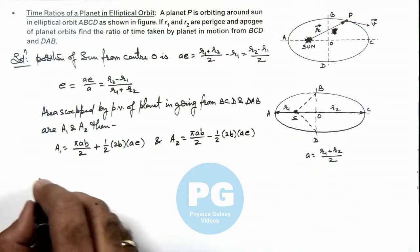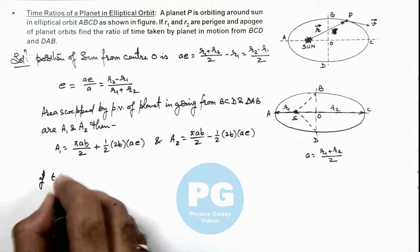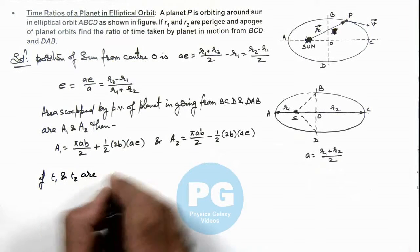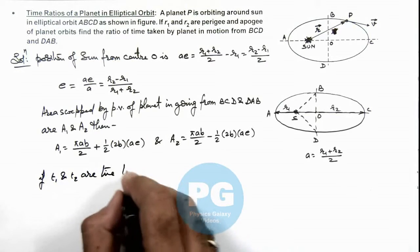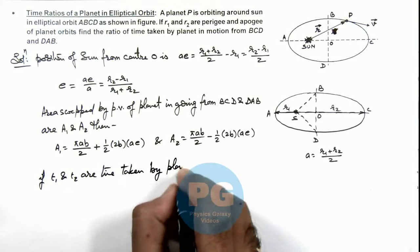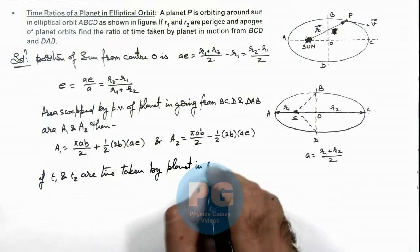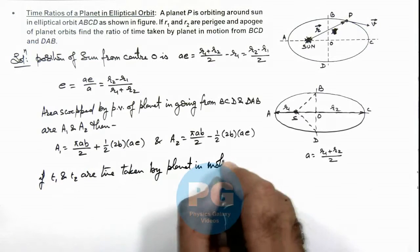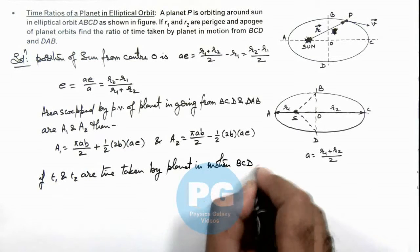Now we can write if t1 and t2 are time taken by planet in motion BCD and DAB.